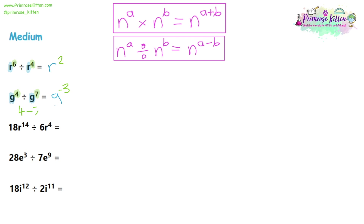Like the easy questions, we've now got extra numbers involved, and it works exactly the same way. First, deal with the normal numbers using normal rules: 18 divided by 6 is 3. Then identify the base number — we've got an R on both sides, so put the R in. Then look at the powers: we've got 14 and 4. Dividing means we take the powers away: 14 take away 4 is 10. So the answer is 3R to the power of 10.